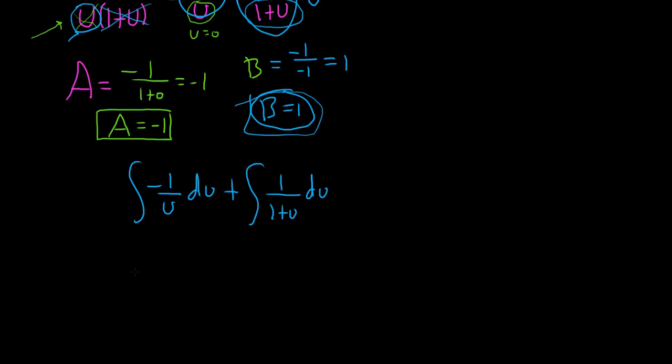So these are both really easy integrals. You can make u subs. This one doesn't require a sub. This is negative ln, absolute value of u. This one, you could let w be equal to 1 plus u. But then dw is du. So there's no need to show the work there. So ln, absolute value, 1 plus u, and then plus c.